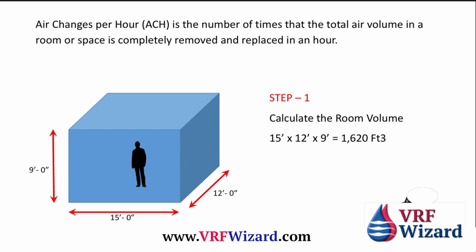Step one: calculate the volume of the room. In this case, we have a 15 by 12 foot room with a 9 foot high ceiling. You want to go to the ceiling and not to the deck or the area below — only the space from which you're going to pull out the air. In this case, that works out to be 1620 cubic feet.